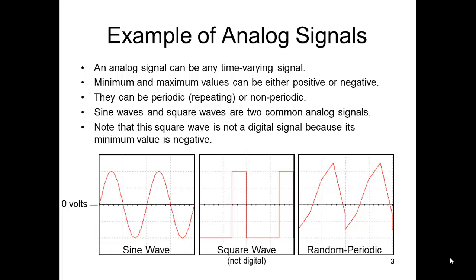They could be random. Sine waves and square waves are two very common analog type signals.